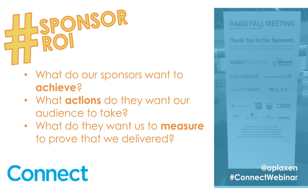For sponsor ROI, the first thing to discuss with your sponsors is: what do they want to achieve? What are their goals? What actions do they want our audience to take? With social media, it is about engagement and community. You want an actionable item, whether that's clicking on a link, being part of a conversation, or going to a booth. And then: what do they want us to measure to prove we delivered? The beauty of social media sponsorships is that you actually can measure. There are a lot of analytics around social media — you can provide that data to your sponsors post-conference so they know they got something worth the money.